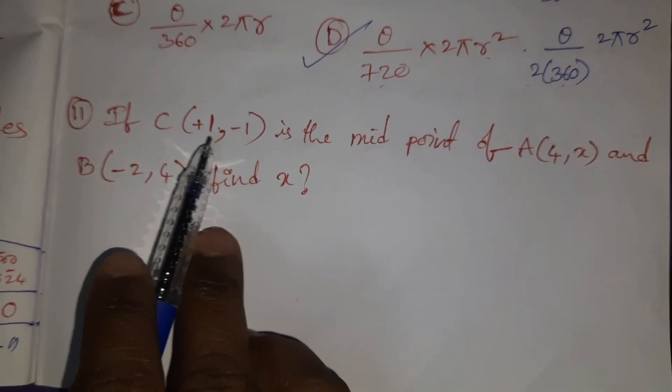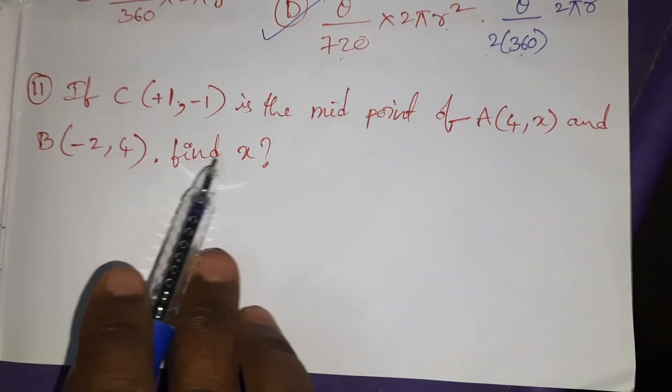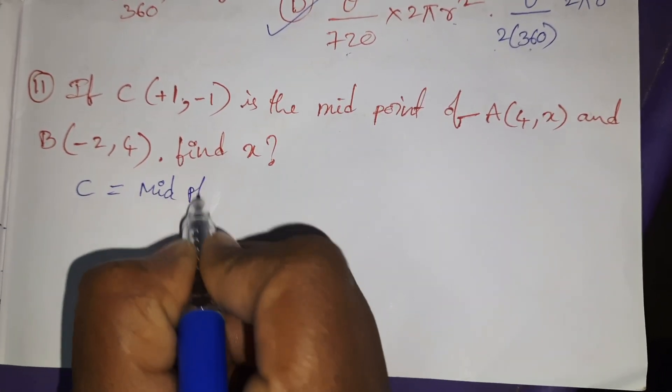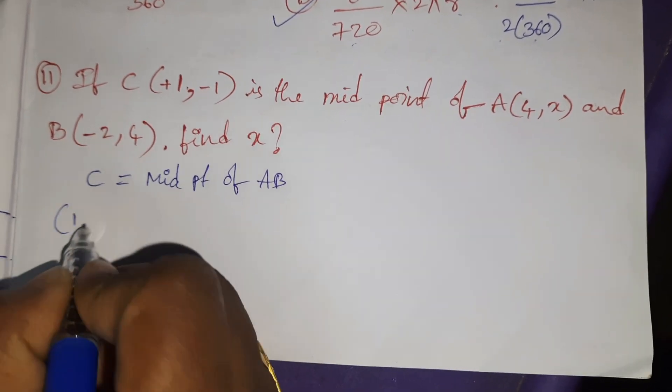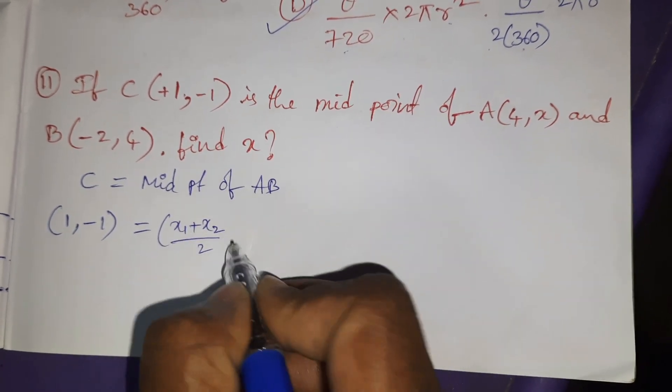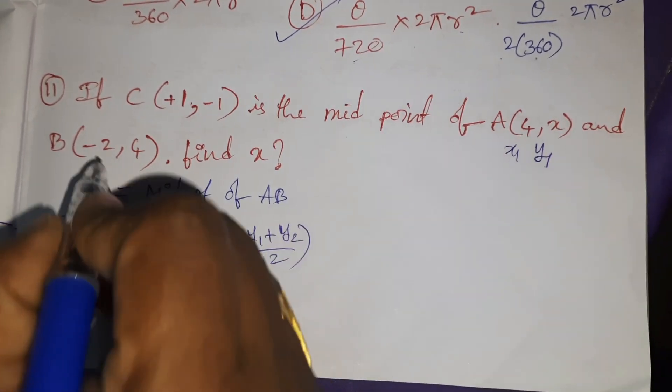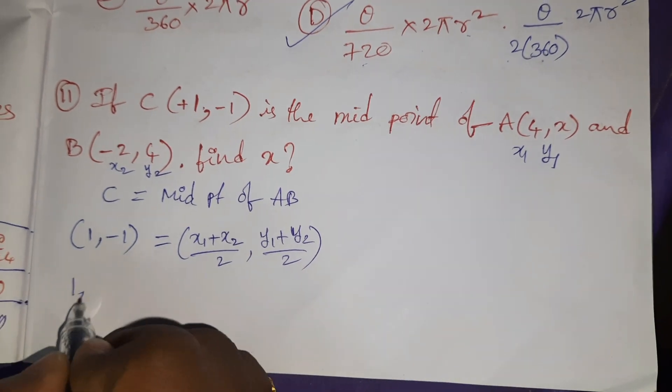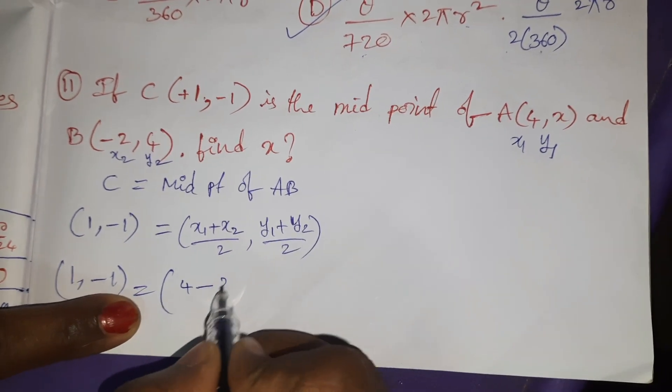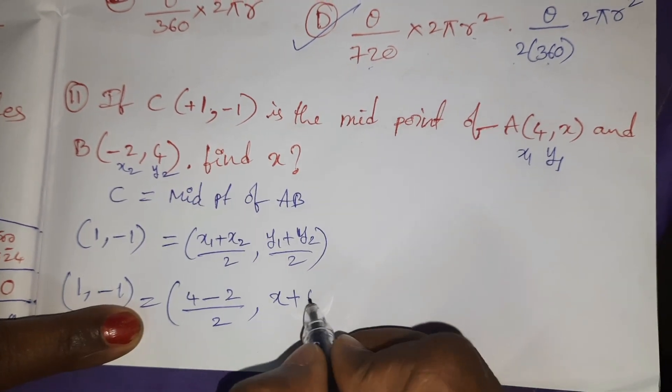If C(1, -1) is a midpoint of A(4, x) and B(-2, 4), find x. Given C is midpoint of A(4, x). 1, -1 = midpoint formula: (x₁ + x₂)/2, (y₁ + y₂)/2. x₁y₁ is A point, x₂y₂ is B point. 1, -1 = (4 + (-2))/2, (x + 4)/2.